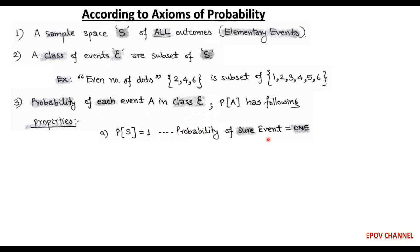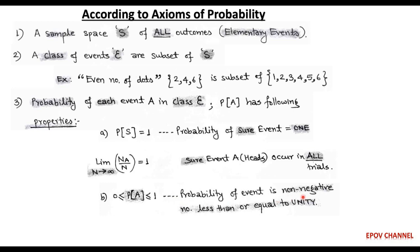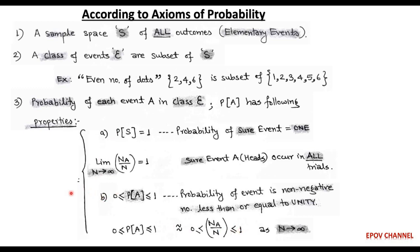For sure events, such as head A occurring in all trials where Na equals n, the probability of A — that is, the limit as n tends to infinity of Na/n — equals 1. Also, the probability of event head A is a non-negative number less than or equal to unity. In other words, the relative frequency of occurrence Na/n with limit n tends to infinity is always greater than or equal to 0 but less than or equal to 1. Both properties of P(A) have a relative frequency interpretation.